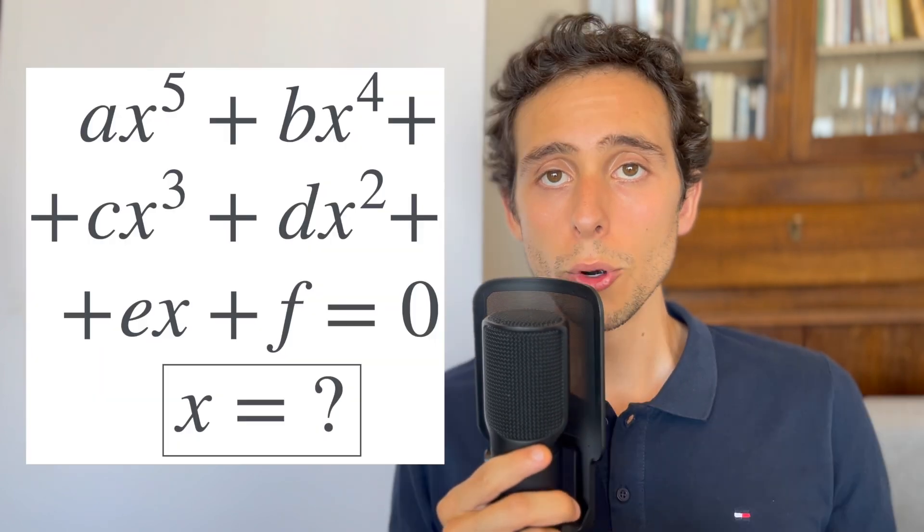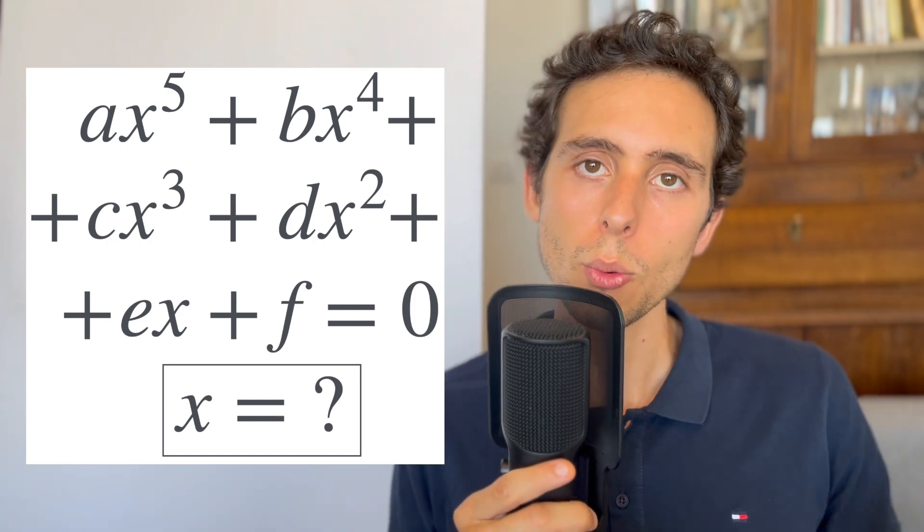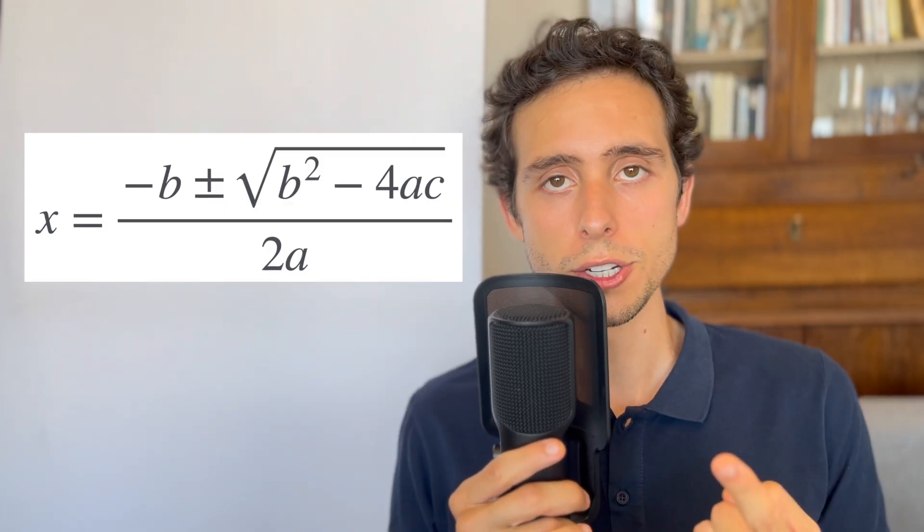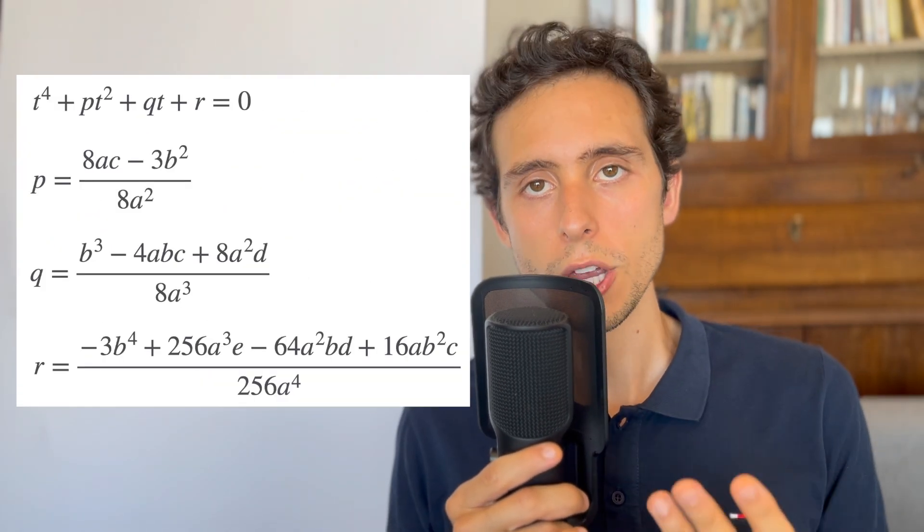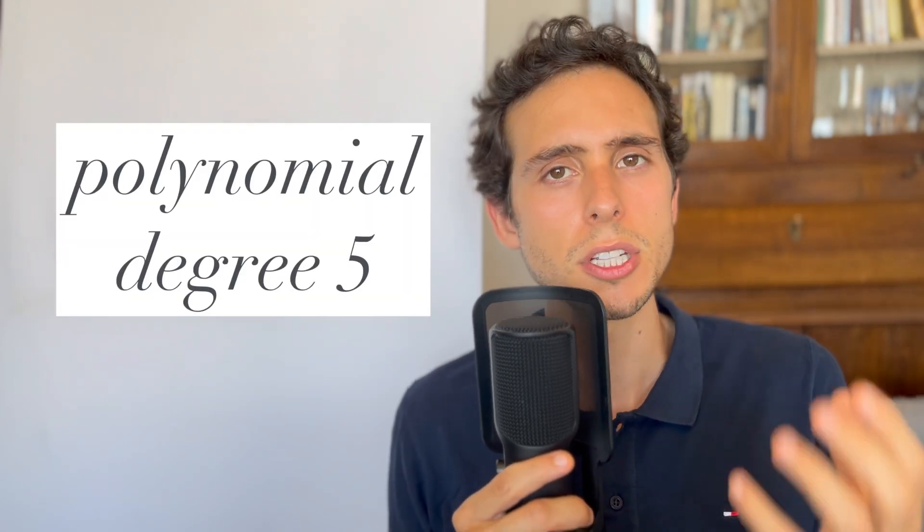In the early 19th century, mathematicians like Niels-Henrik Abel and Evariste Galois proved that there is no general solution in radicals for quintic equations, unlike quadratic, cubic, and quartic equations. There seems to be something special about polynomials of degree 5. But what is it? Let me know in the comments section your thoughts about it.